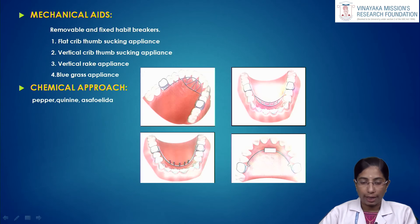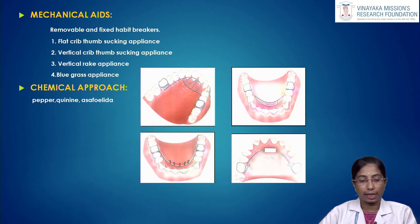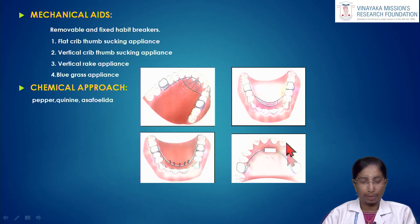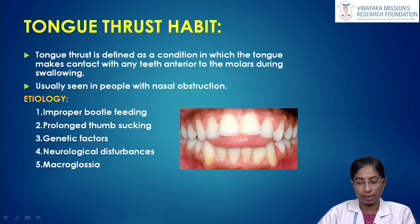Mechanical aids include removable or fixed habit breakers commonly used to break the thumb sucking habit. These include the flat crib thumb sucking appliance, vertical crib, vertical rake, and blue grass appliance. The chemical approach uses substances like pepper, quinine, or asafoetida, which are commonly available at home.